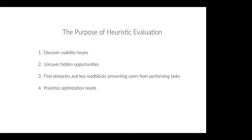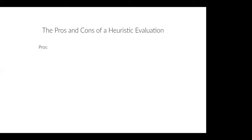Before we get started and talk about how you can actually perform a heuristic analysis, I want to highlight the pros and the cons, because there are many different sides to it. The process requires a limited budget — you'll need about three to five UX experts to run the analysis, but that's it. You don't need huge tools or a ton of money. If you don't have a ton of money to spend on new tools, research, or employees, then a heuristic analysis is a great option.